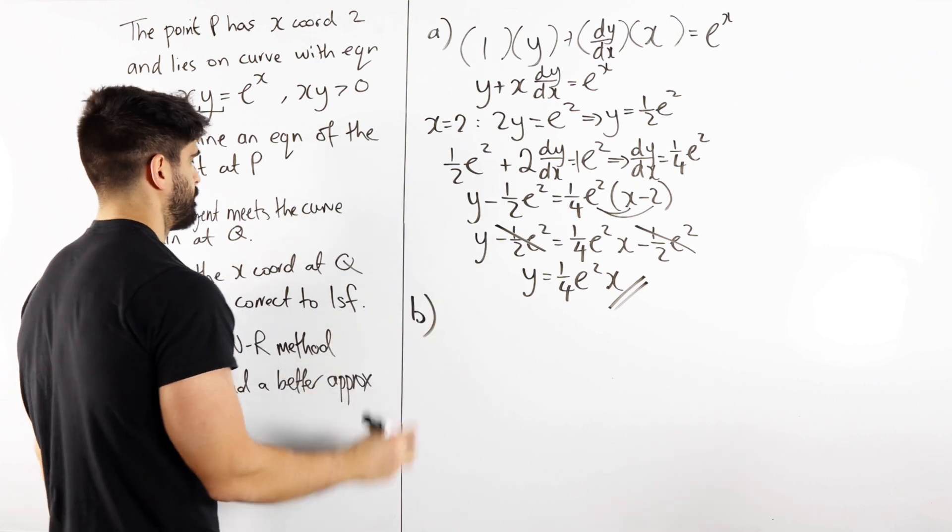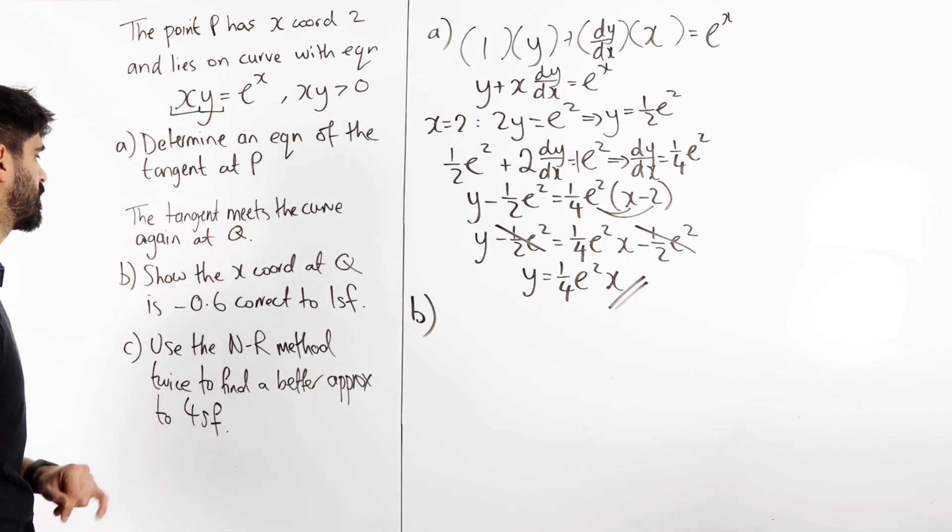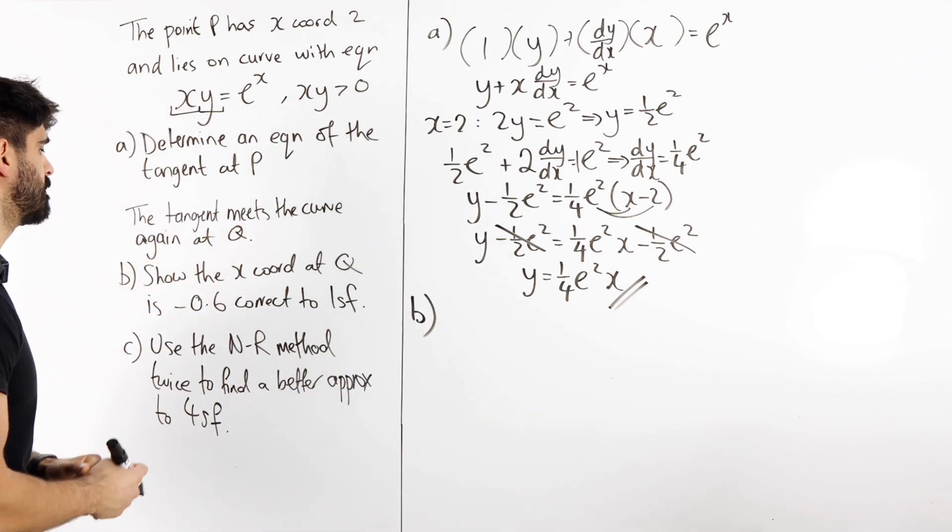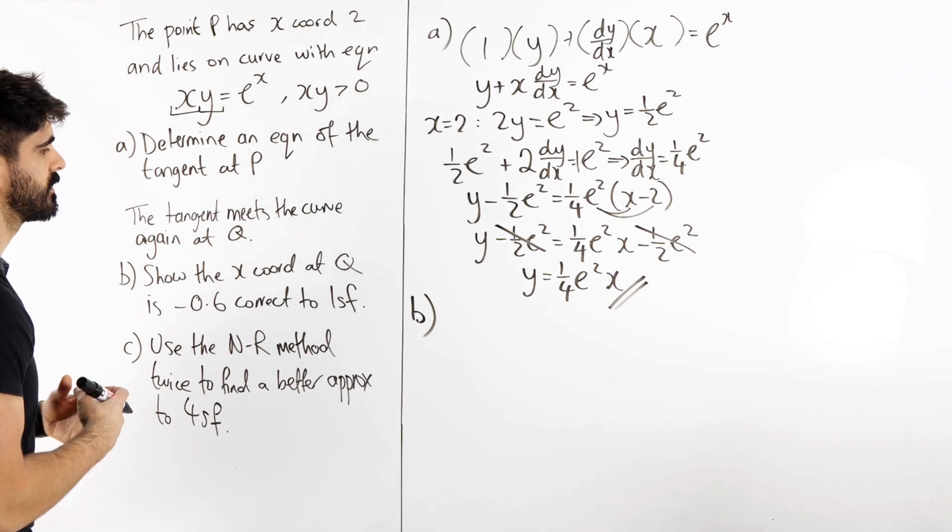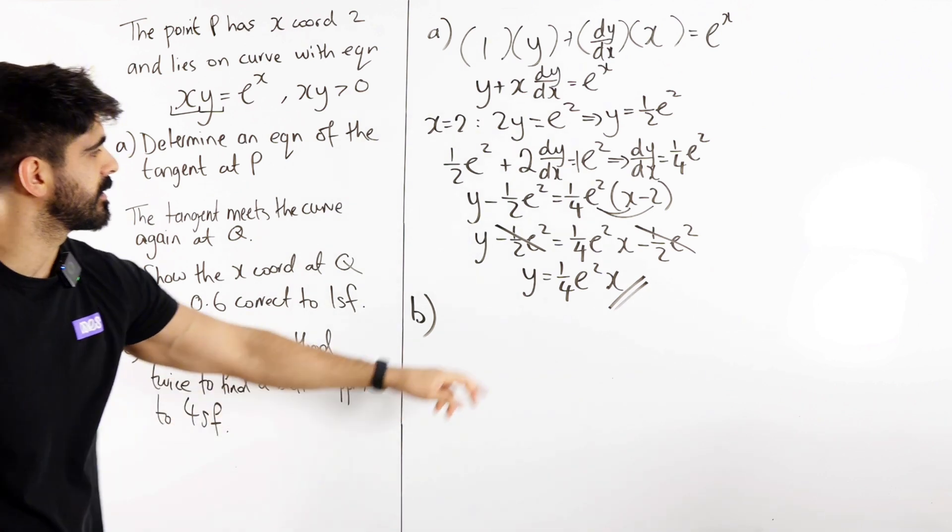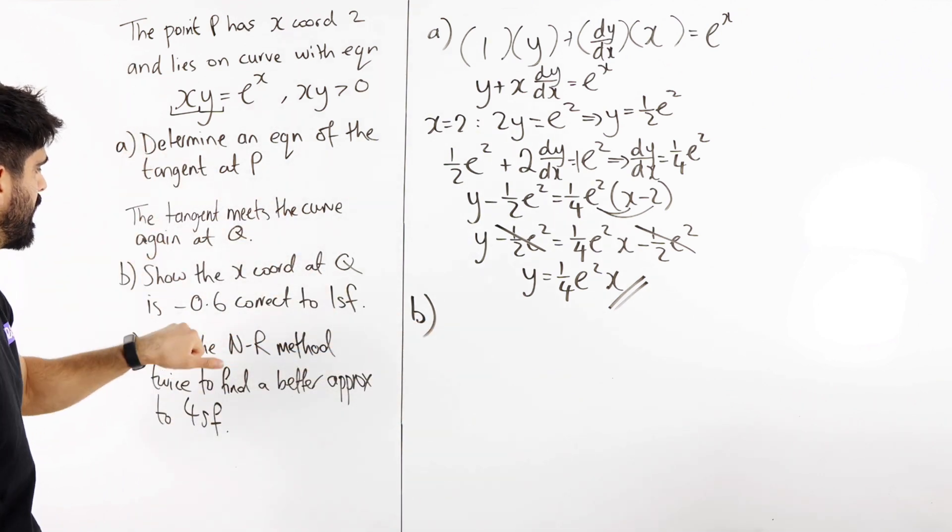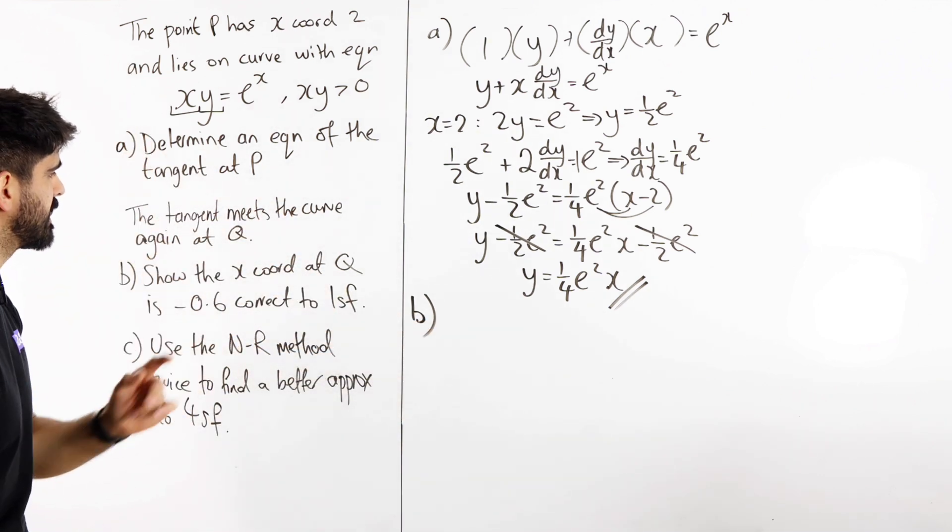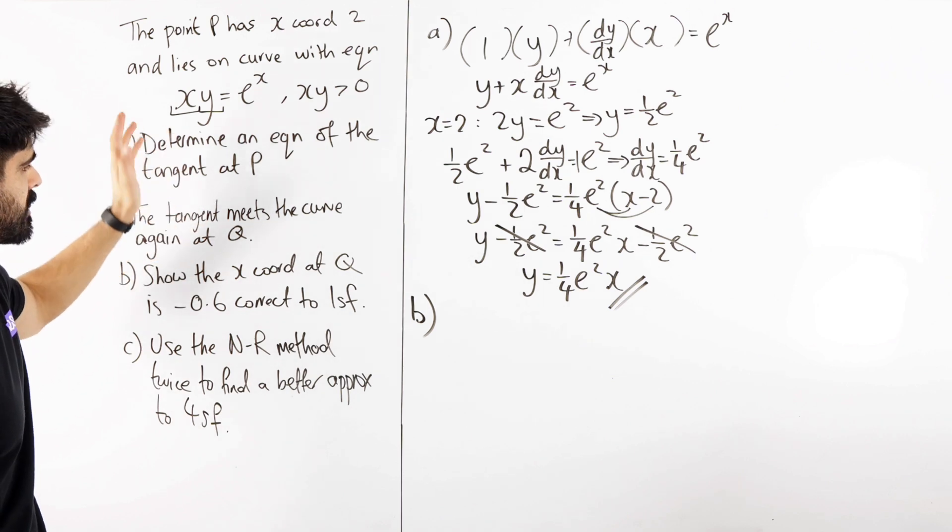So there's our solution, just y equals a quarter e squared x. Part B. The tangent meets the curve again at q, show that the x coordinate of q is minus 0.6 correct to 1 significant figure. Okay, so if it's meeting the curve again, that's simultaneous equations, we're going to sub this into this and show that minus 0.6 is a solution correct to 1 significant figure.